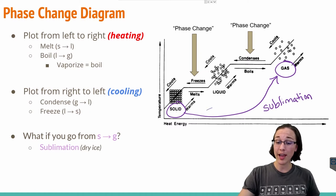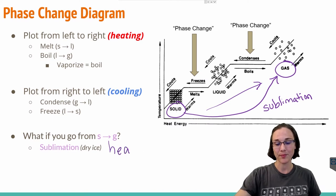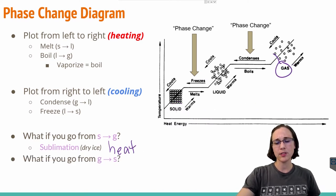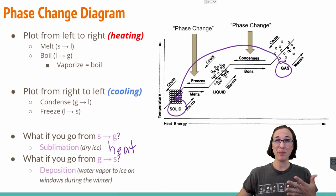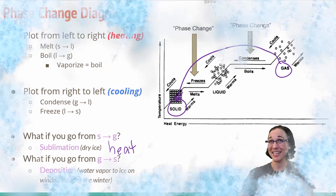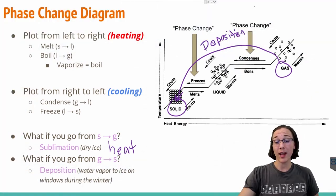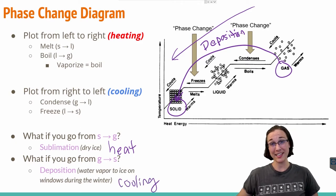Since sublimation is going from left to right across the diagram, we can assume it is a process that requires heat to occur. But what if we go from a gas to a solid and skip the liquid in between? That's called deposition — like what happens to water vapor outside when it directly hits your windshield during winter and turns to ice immediately. Since deposition goes from right to left across the diagram, it is a process that involves cooling or giving off heat.